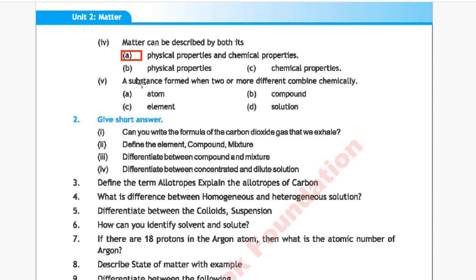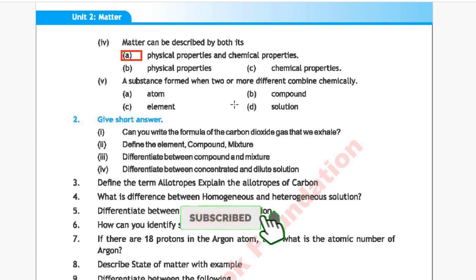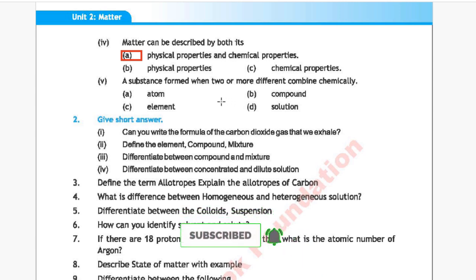Question 5: A substance formed when two or more different elements combine chemically. Option A: atom, Option B: compound, Option C: element, Option D: solution. The correct answer is Option B, compound.